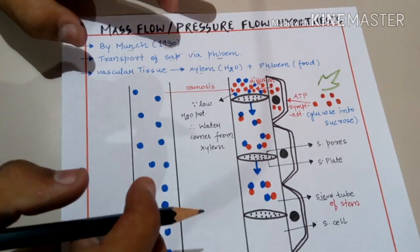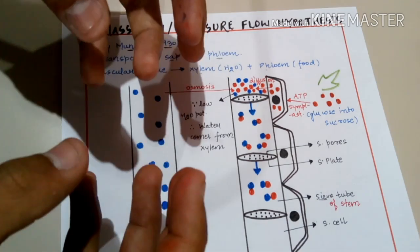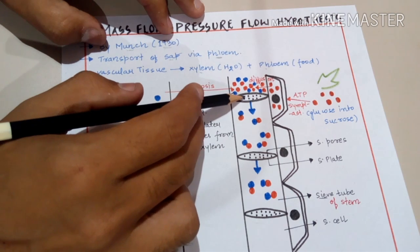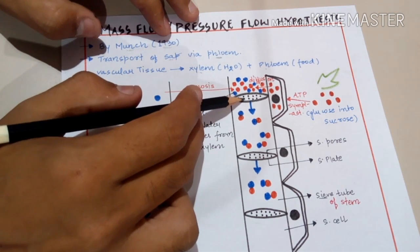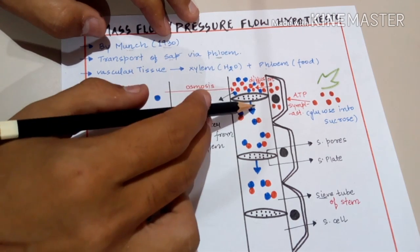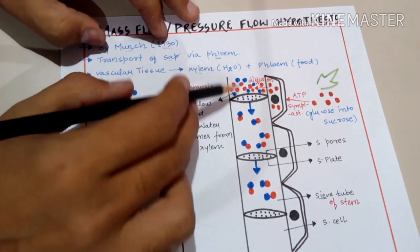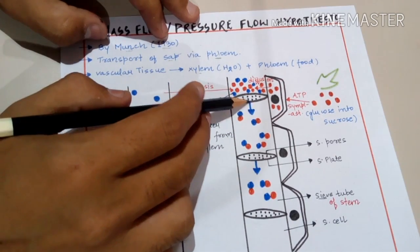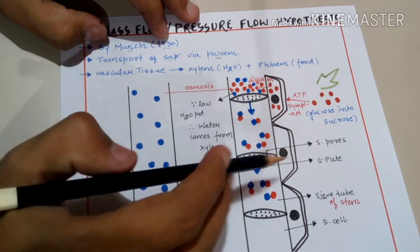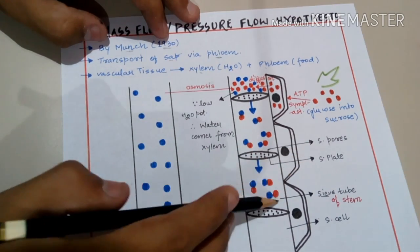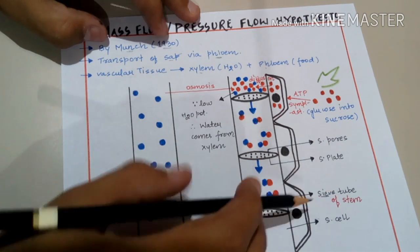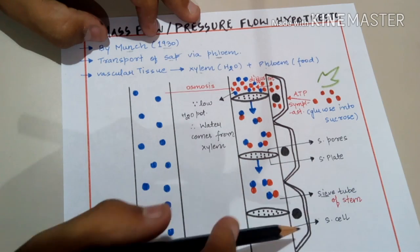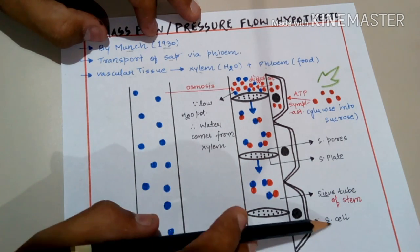Sieve cells are attached to each other via perforated plate-like structures. These plates are known as sieve plates, and the pores in them are sieve pores. These pores allow the transfer of solute molecules from one sieve cell to another. The whole tube formed is the sieve tube, and the individual cells within it are sieve cells.